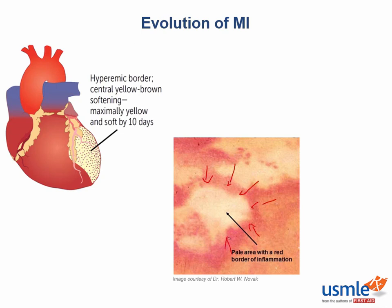Vessels finally start to grow into the granulation tissue, always starting at the borders. This is why we have a hyperemic, very red border surrounding the pale infarct. The monocytes use these weak vessels to transmigrate into the necrotic tissue, and the macrophages begin consuming all of that dead tissue.